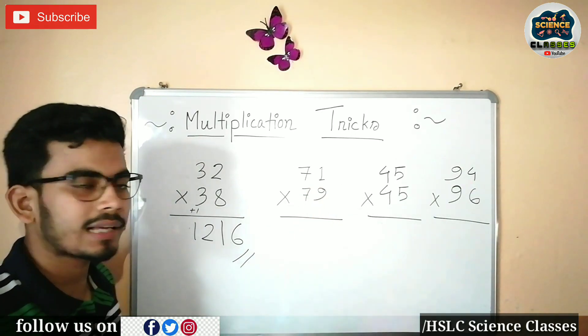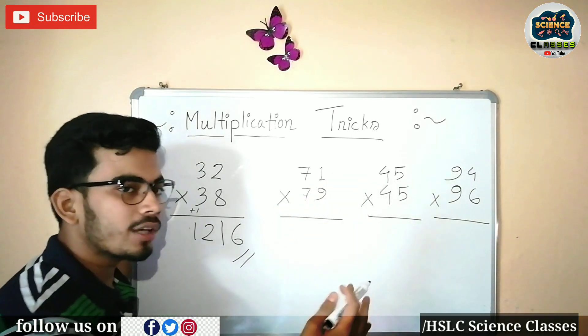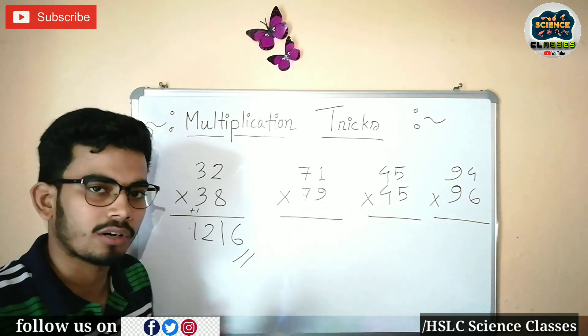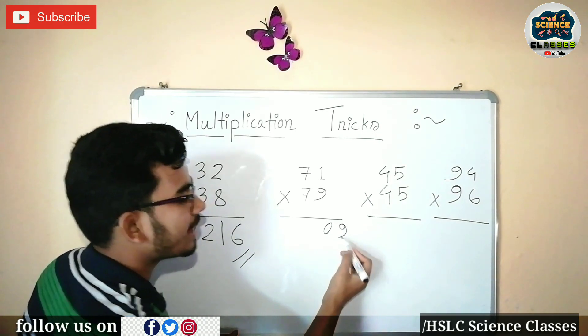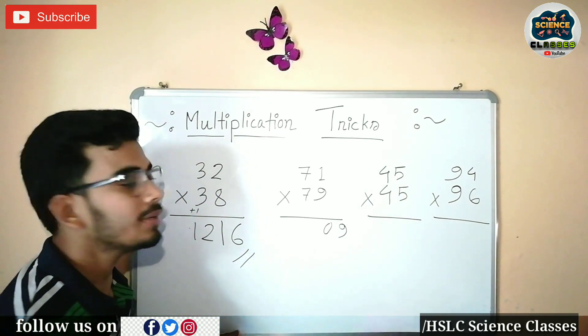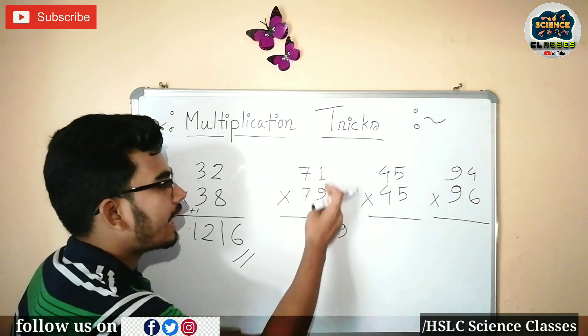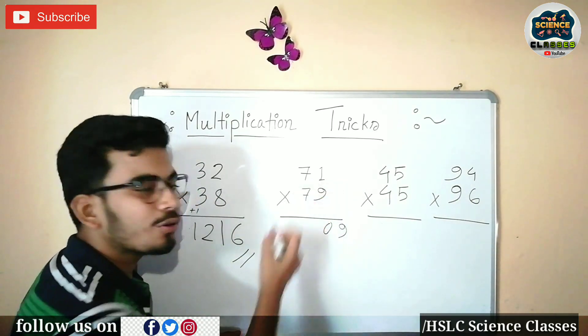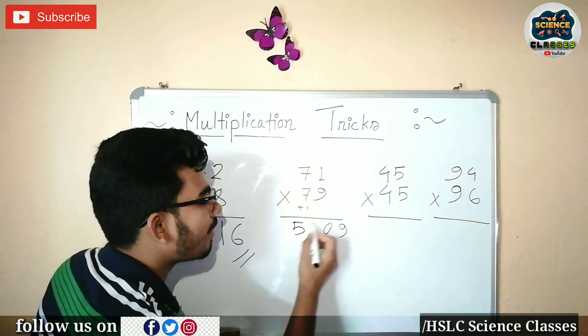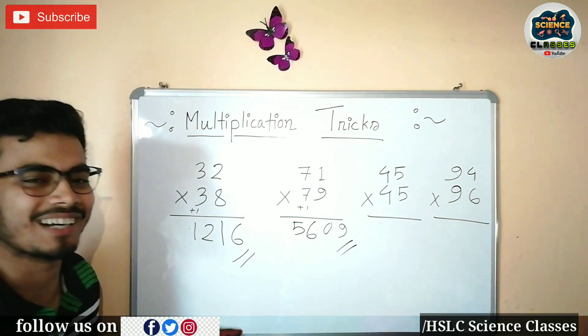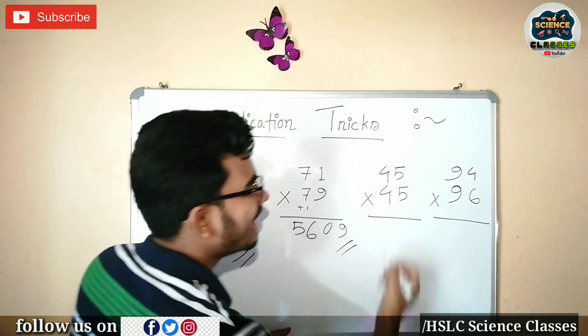Let's check the next example. 71 and 79. 9 times 9 is 81, write 1 and carry 8. If we have single digits, we make double digits. 9 times 9 is 81. With plus 1, it will be 56. So this is 5609.